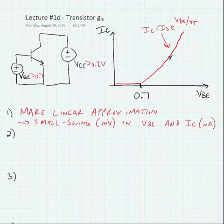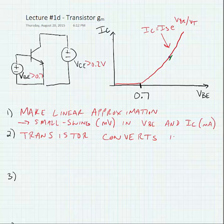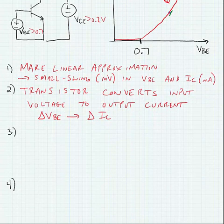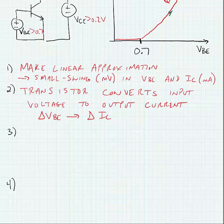The transistor converts input voltage to output current. What it's doing is changing this delta VBE into some delta IC, and the way it's doing it is through what we call a transconductance.